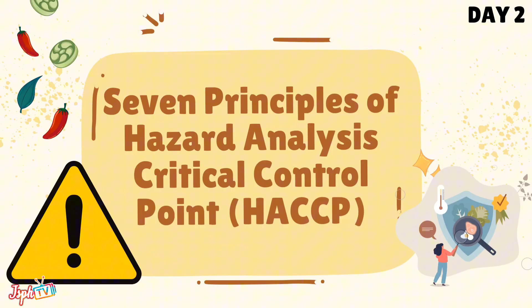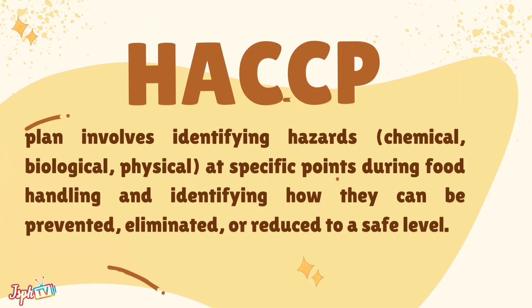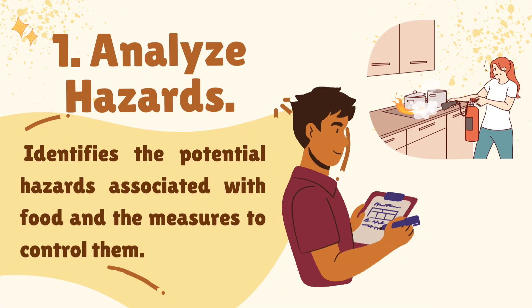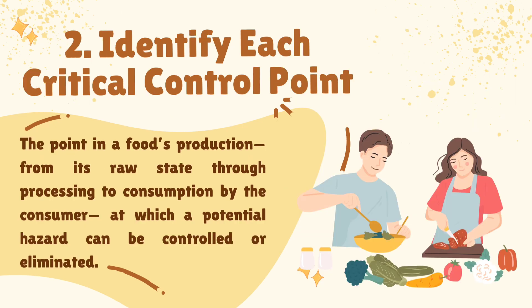The seven principles of Hazard Analysis Critical Control Point — HACCP. A HACCP plan involves identifying hazards at specific points during food handling and identifying how they can be prevented, eliminated, or reduced to a safe level. First, analyze hazards by identifying the potential hazards associated with food and the measures to control them. Second, identify each critical control point — the point in a food's production from its raw state through processing to consumption by the consumer.